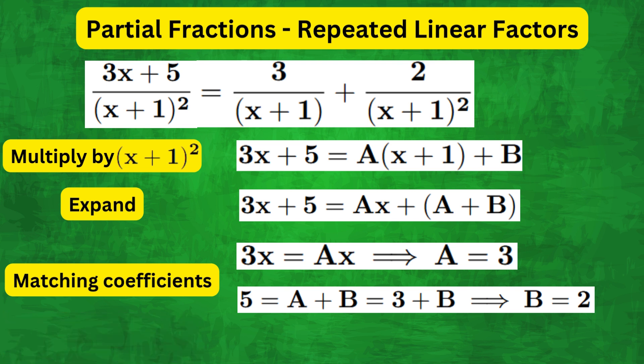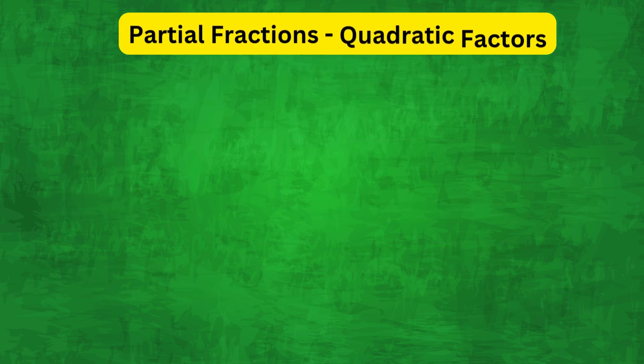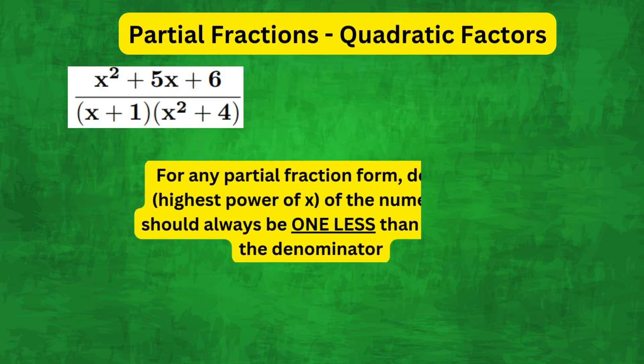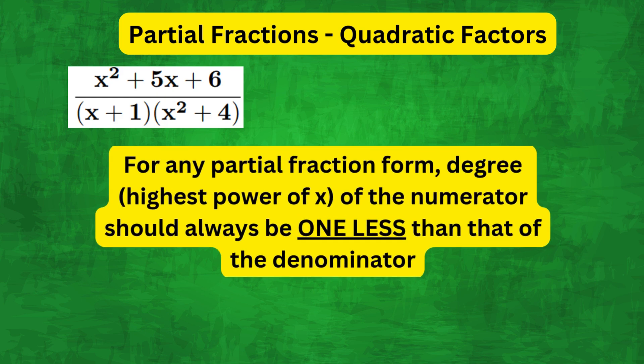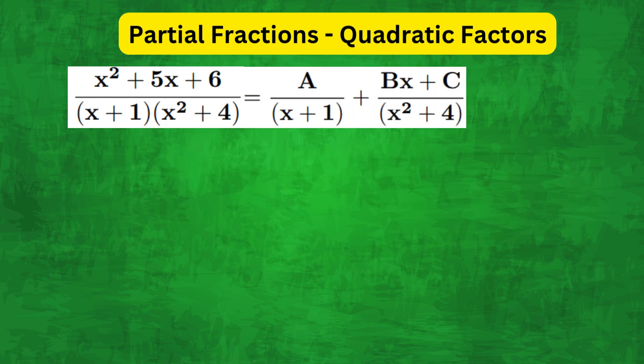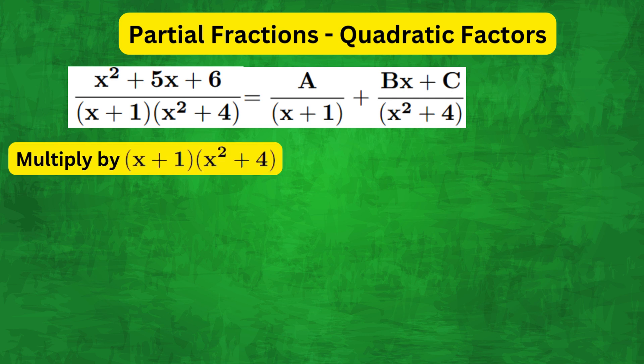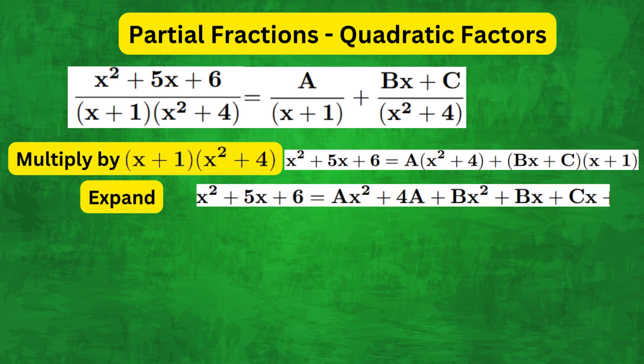Now we consider the case when the denominator has quadratic factors. Recall the degree of numerator is always one less than that of the denominator. So in this case the numerator for x² + 4 would have the form Bx + C. We multiply both sides by (x + 1)(x² + 4) and expand to get this equation.